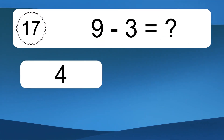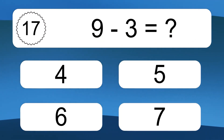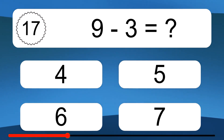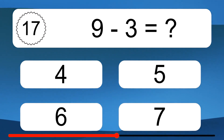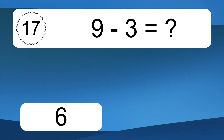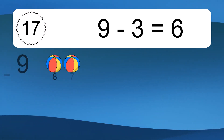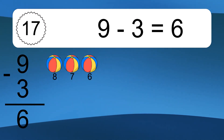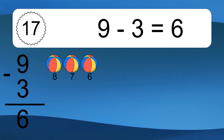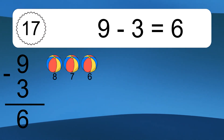9 minus 3 equals what? 9 minus 3 equals 6. Let's count it: 8, 7, 6.